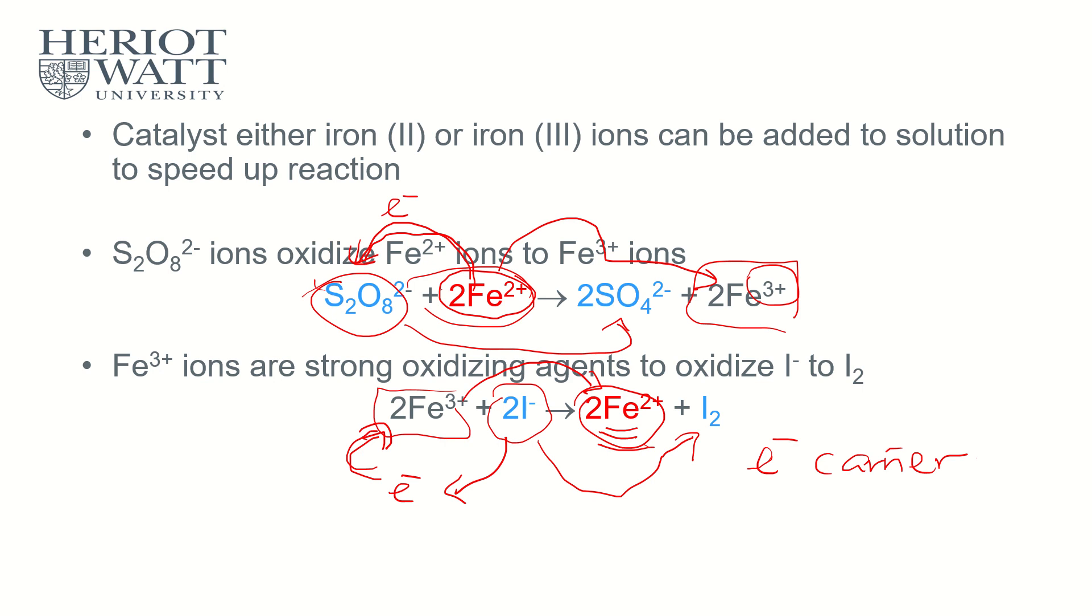They can either donate electron first and then accept later, or they accept electron first and donate later in two separate reactions. So, that is how homogeneous catalysts work. So, yeah. That's all for the topic. And this is the last video. So, hope you can understand whatever I explained in the previous videos. So, if anything wrong or anything you're not sure, please feel free to ask. Thank you.